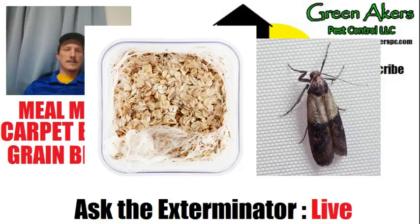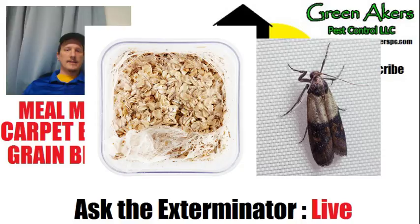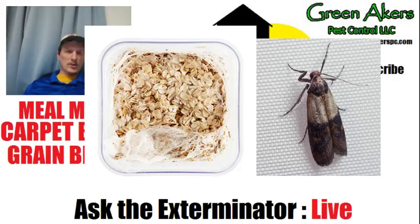What happens is the moth will lay their eggs on the dried product, typically wherever it's packaged or manufactured. Usually grains are washed, which is why meal moths are typically brought in via bird seed — it's not as heavily monitored. Birds don't care if they eat a moth, so they don't really monitor bird seed. People will keep their bird seed in their pantry, bundled up, and just scoop from it — that's how the meal moths come in.